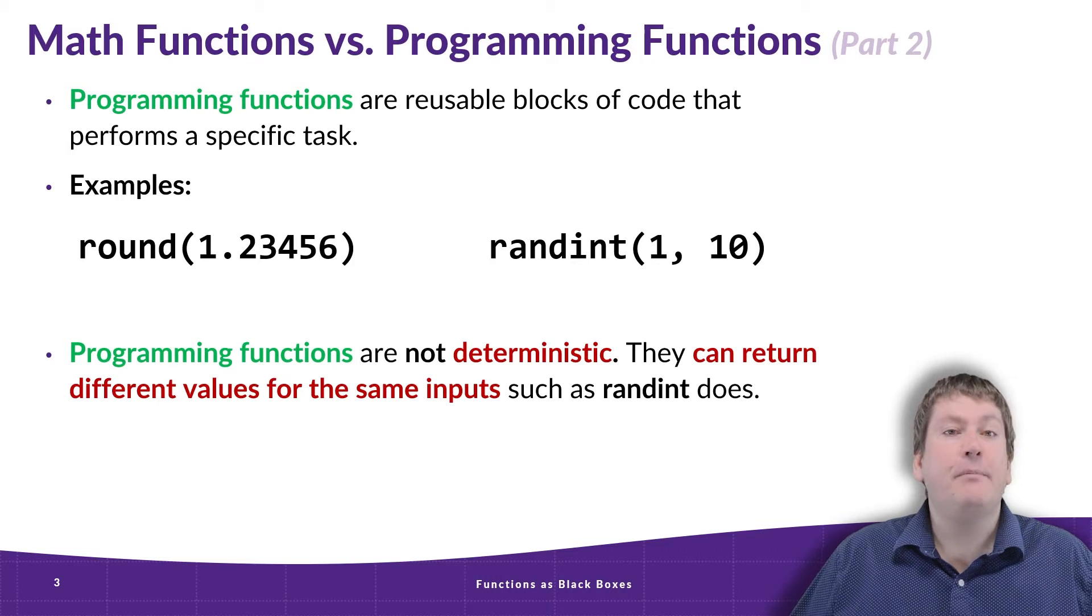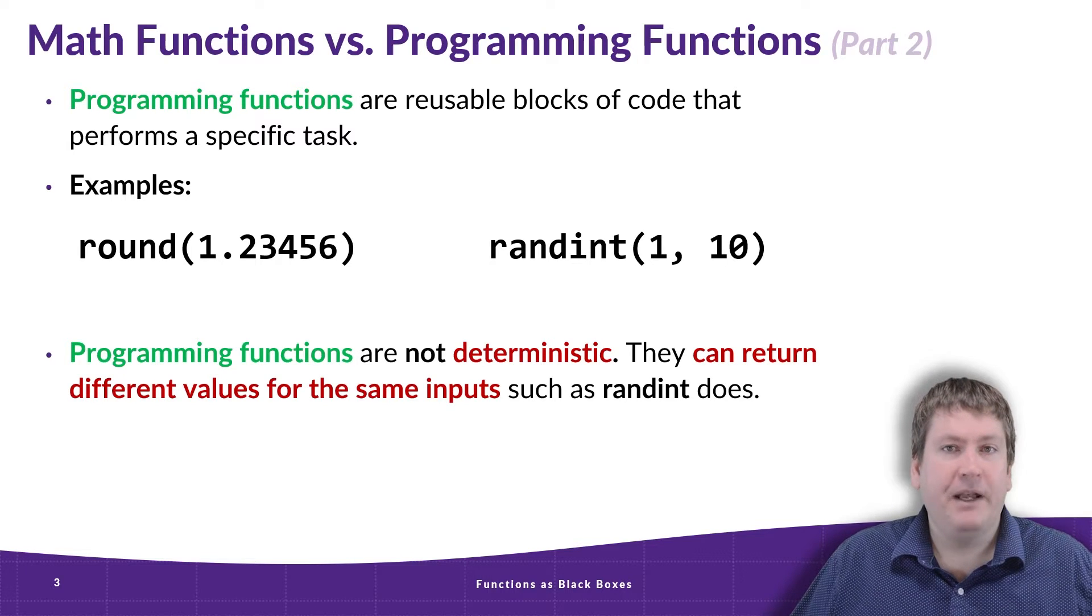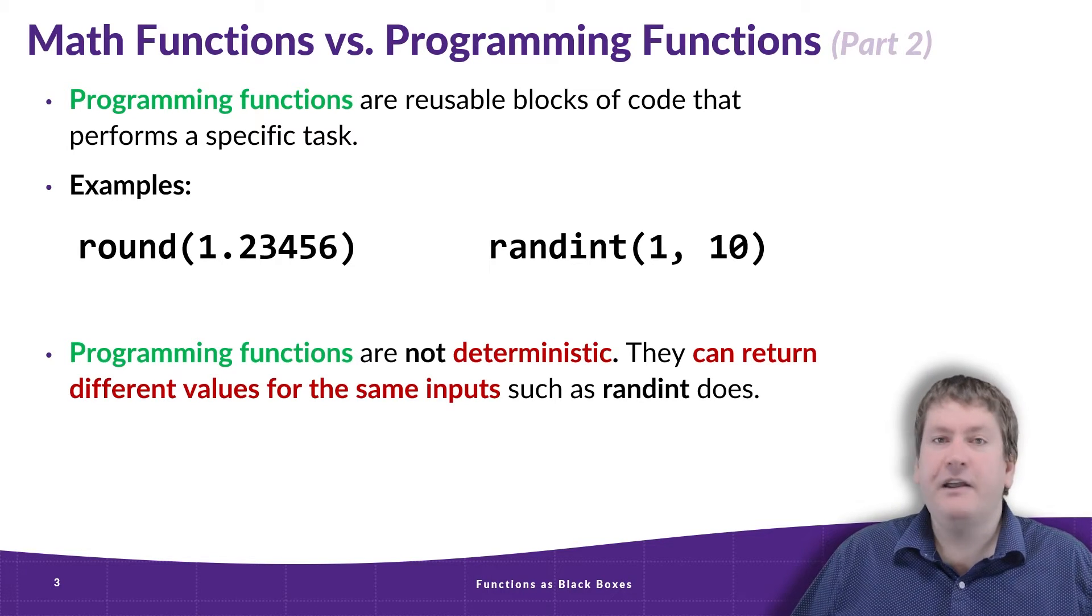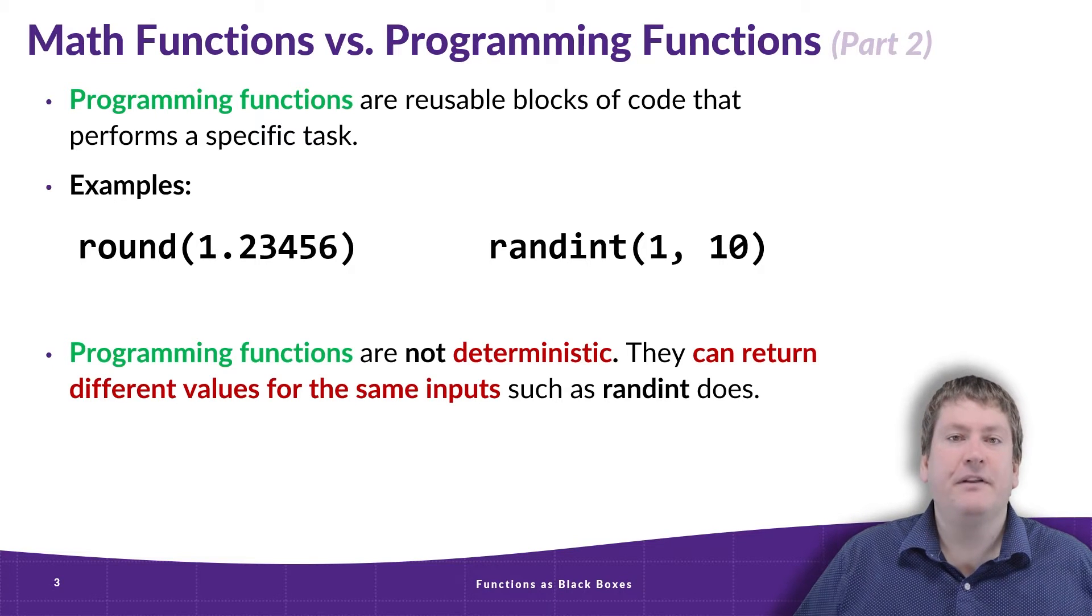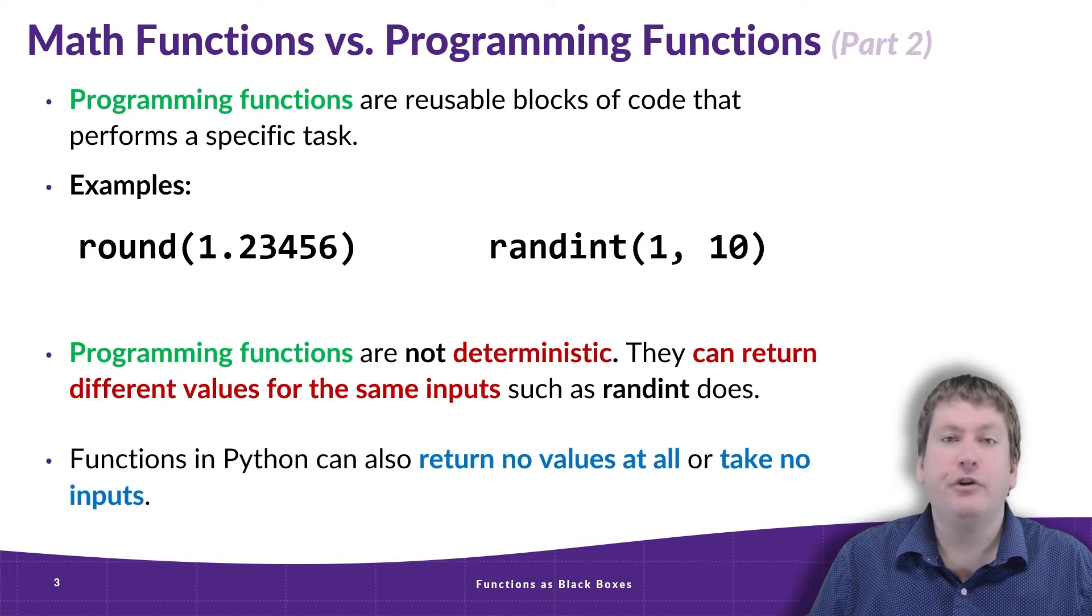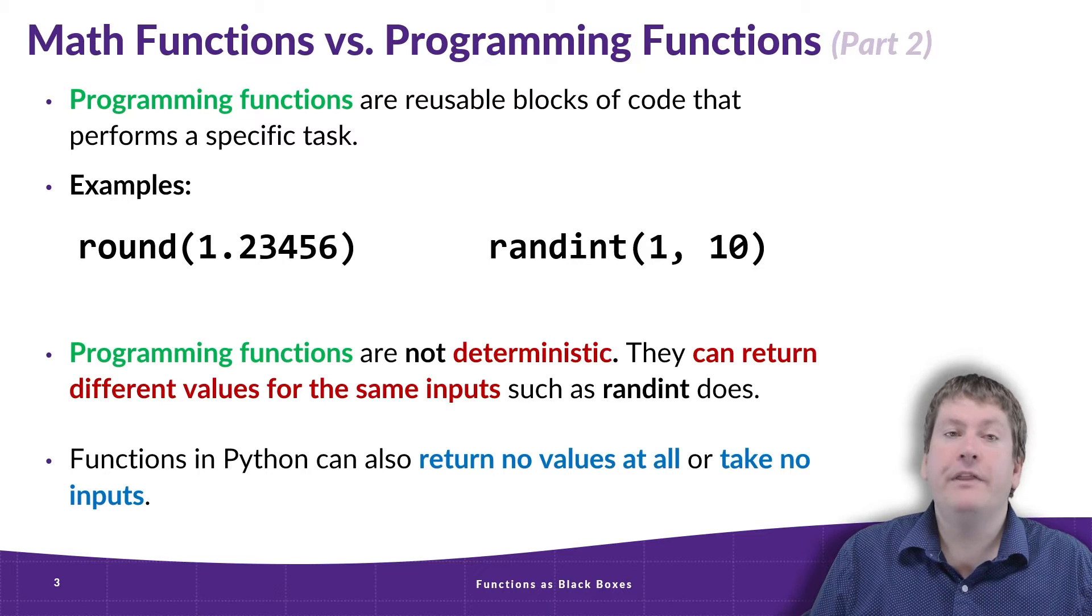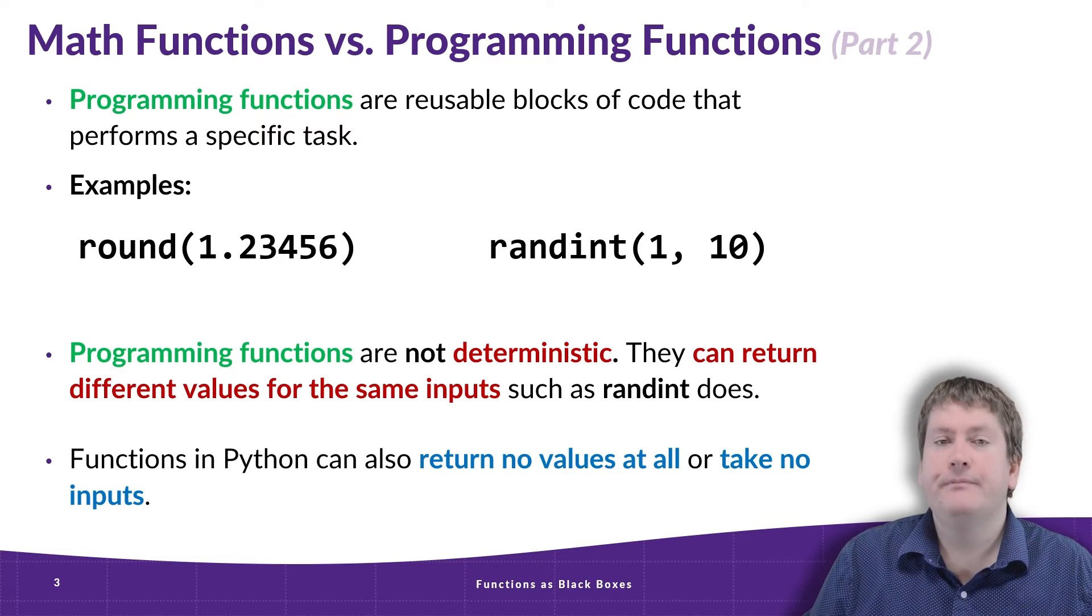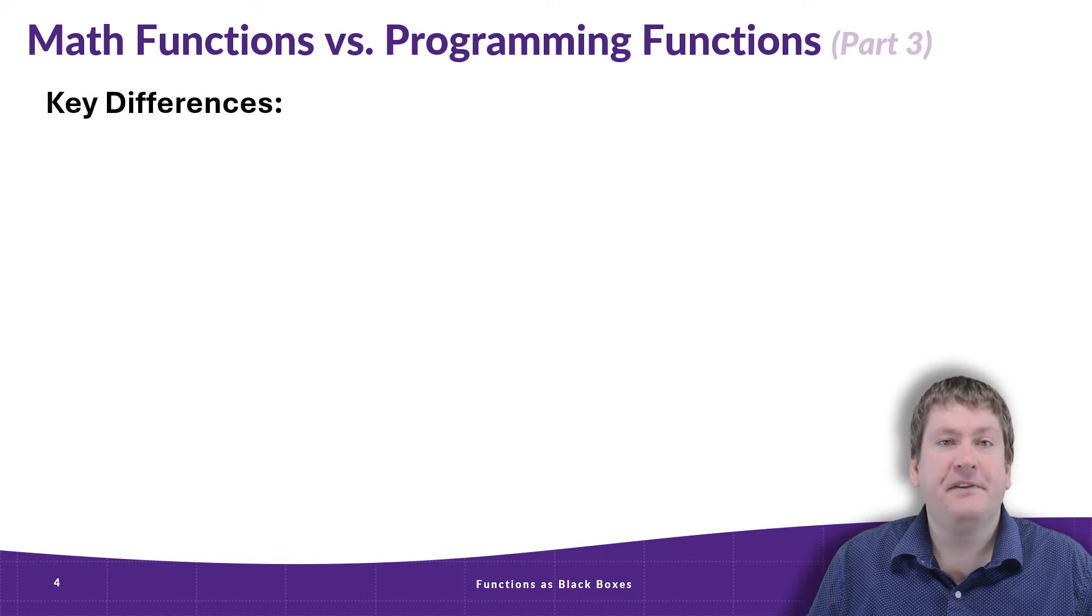Because of this, we say programming functions are not deterministic. They can return different values for the same input, just like we saw with randint. Python functions can also return no values at all, or they can take no inputs.